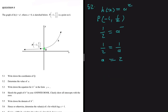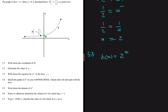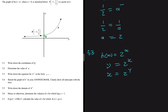For 5.3, the question asks us to write down the equation of h inverse in the form y equals... At this point we know h of x equals two to the power x. To find the inverse, the first step is to swap x and y. So y equals two to the power x becomes x equals two to the power y.